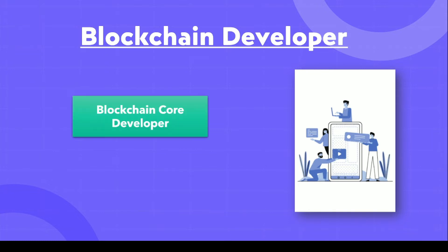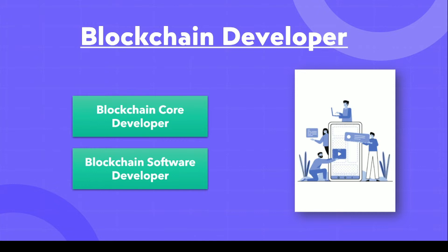Before talking about the roadmap, we need to understand that there are two types of blockchain developers. First, the blockchain core developer; second, the blockchain software developer. A blockchain core developer mainly deals with the architecture of blockchain — the core fundamentals — while blockchain software developers are the ones who create decentralized applications. In the current job marketplace, blockchain software developers are much more in demand.